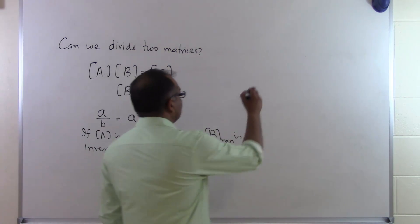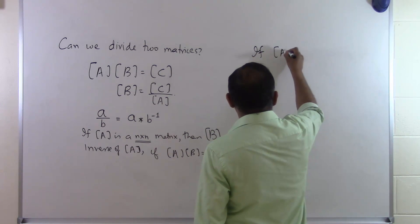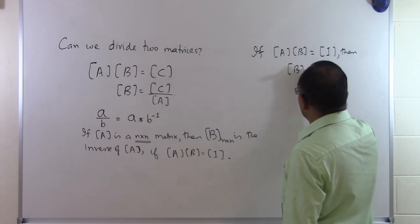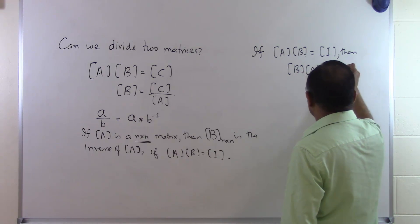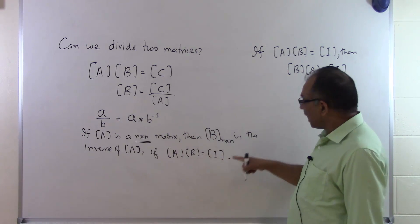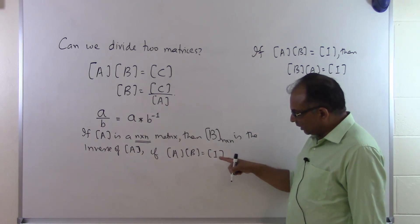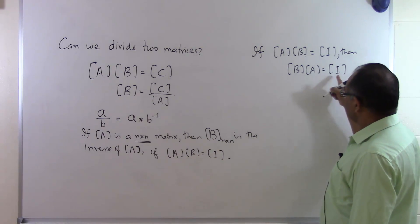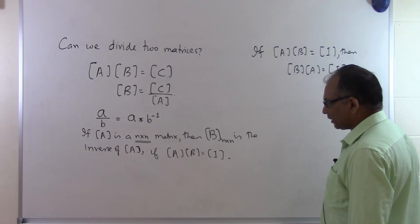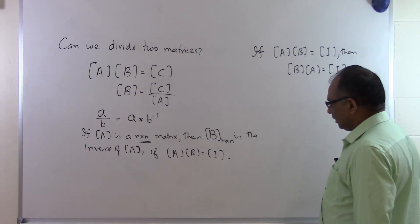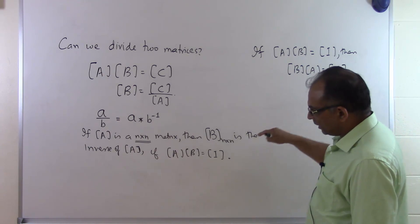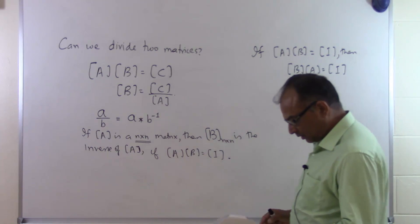If A and B are both square matrices and A times B equals the identity matrix, then B times A will automatically also equal the identity matrix. Many people think you need to show both A times B equals I and B times A equals I to prove B is the inverse of A, but that's not true. If A times B is I, then B times A is automatically I as well. This also means if B is the inverse of A, then A must be the inverse of B.